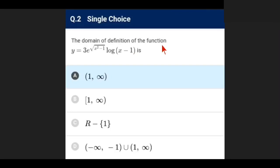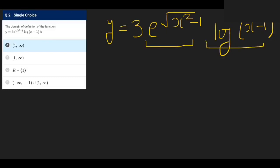The question asks you to find the domain. Let's see the problem. What is given? y equals 3 times e raised to the power of square root of x squared minus 1, times log of x minus 1. How to solve this problem? Here we have one function and another function.